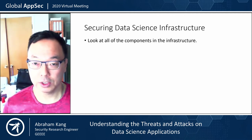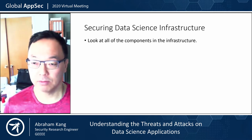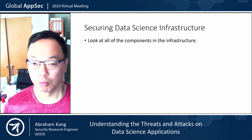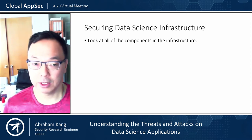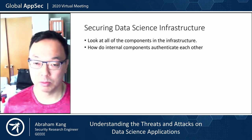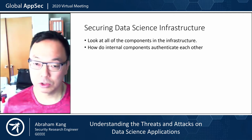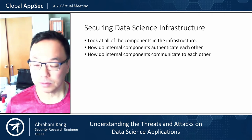When securing data science infrastructure, you have to look at all of the components. You have to look at how the managers, executors, and drivers communicate — what role each component plays, how they communicate, and how they authenticate to each other. It's so important to look at these internal components. You can't just say, "I've got Kafka and it's secure." You need to understand how the components work together, how they authenticate to each other, and how they communicate.